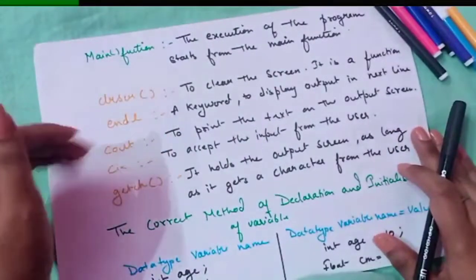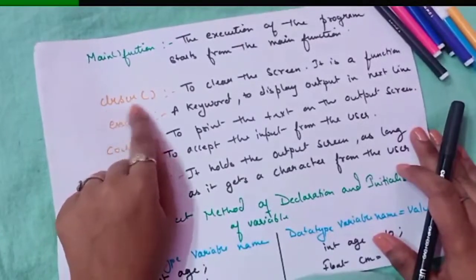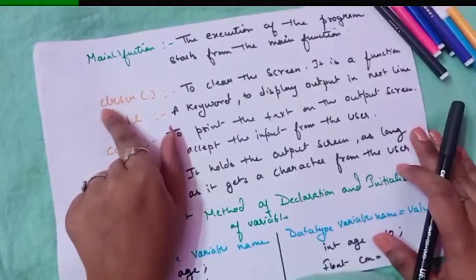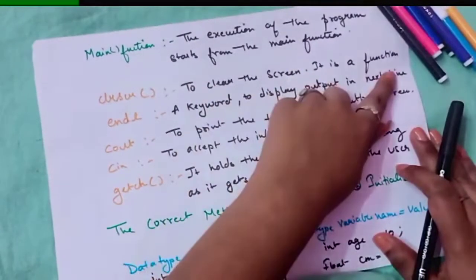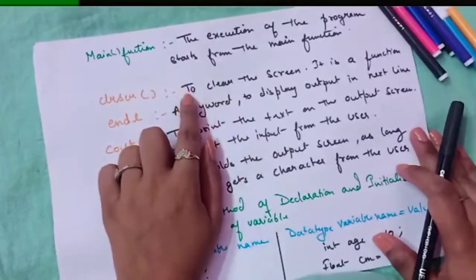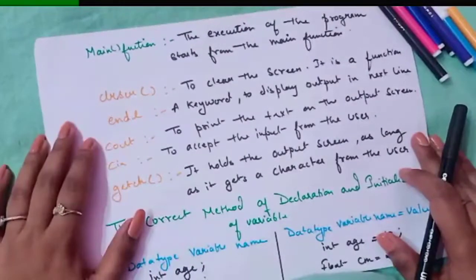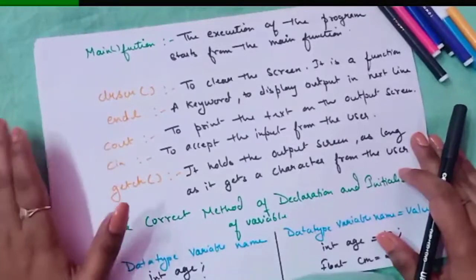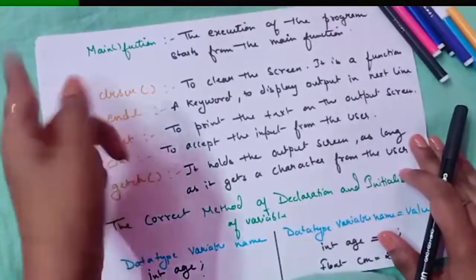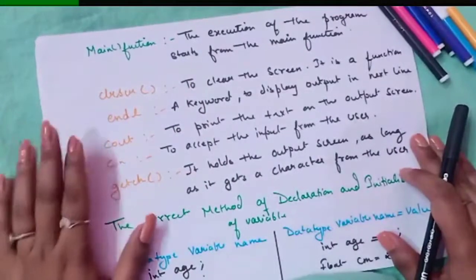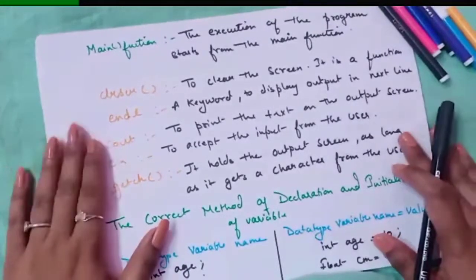After declaring main, we have `clrscr()`, which comes under the conio header file. `clrscr()` is used to clear the screen. If many outputs have been generated previously, it becomes difficult to identify the latest output. So we use this to clear the screen and present a fresh screen showing only the current output.